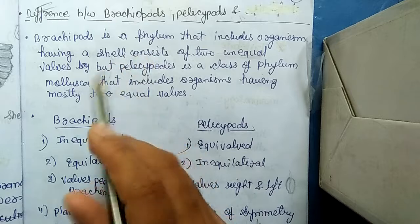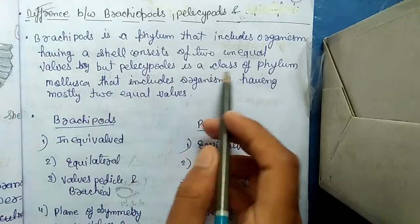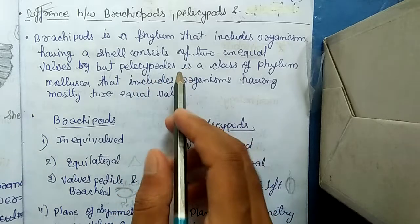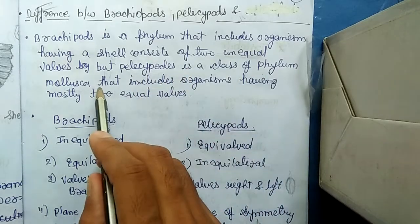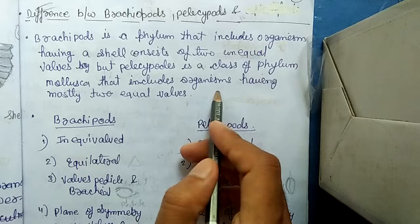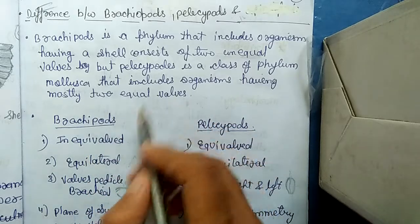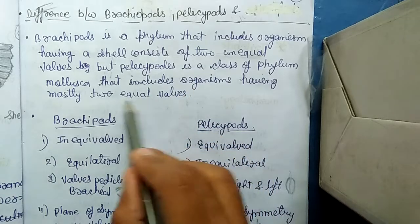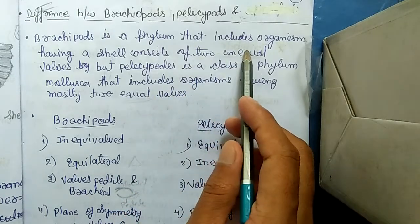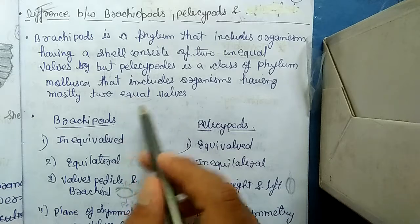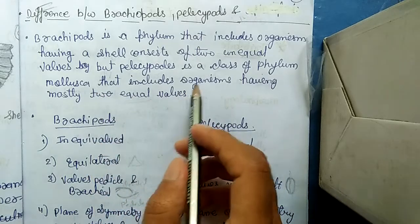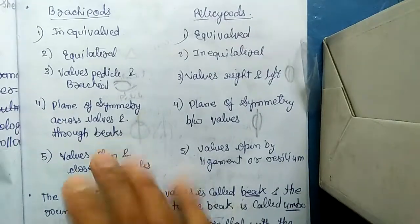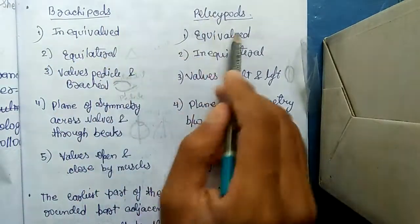Pelecypoda is a class of phylum Mollusca. Organisms of Pelecypoda belong to phylum Mollusca and include organisms having mostly two equal valves. So, Brachiopoda have unequal valves and Pelecypoda have equal valves.